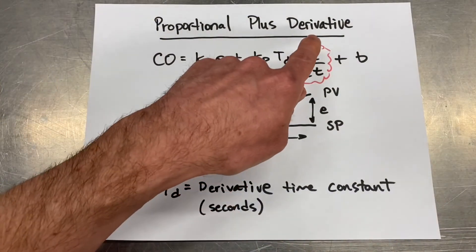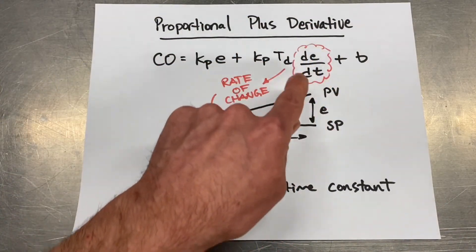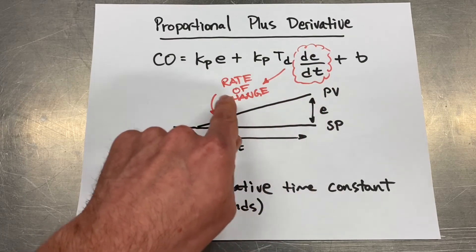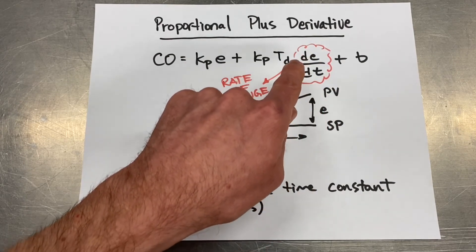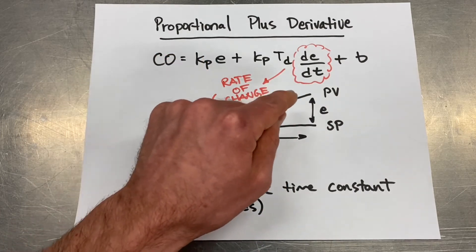The last term that we have to talk about is derivative. So we have a proportional plus derivative calculation here. Here's the derivative right here. And what derivative does is it reacts to rate of change. You can think of this almost like slope, rise over run, but it's at a point, an instantaneous point on that graph there.